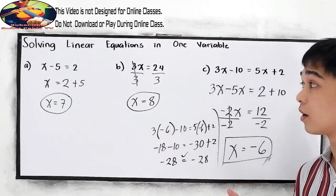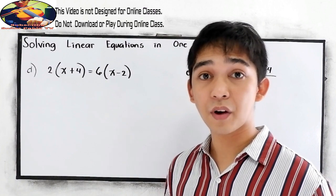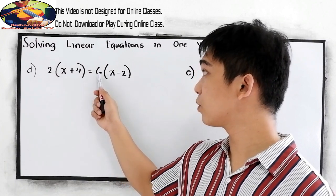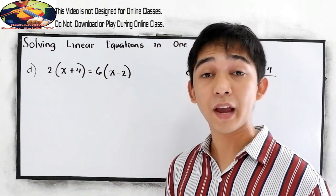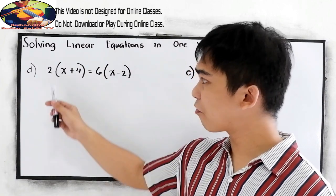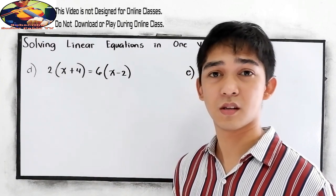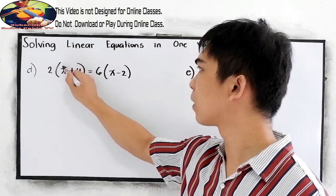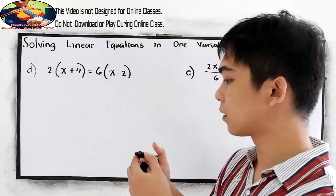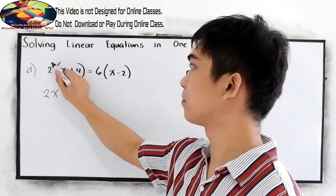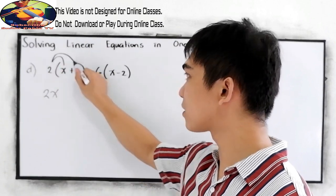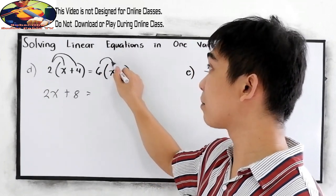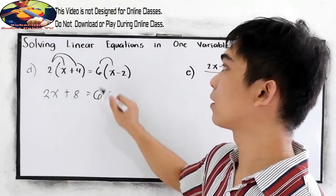Let us proceed to example letter D: 2 times the quantity x plus 4 is equal to 6 times the quantity x minus 2. We are going to find the value for x. We have parentheses, so let us remove them by distributing the number outside. 2 times x is 2x, and 2 times positive 4 is positive 8. On the right side, distribute 6: 6 times x is 6x, and 6 times negative 2.